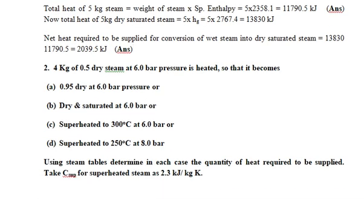Second numerical: four kilograms of 0.5 dry steam at six bar pressure is heated so that it becomes — Case 1: 0.95 dry at six bar; Case 2: dry and saturated at six bar; Case 3: superheated to 300 degrees Celsius at six bar; Case 4: superheated to 250 degrees Celsius at eight bar. Using steam tables, determine in each case the quantity of heat required to be supplied. Take Cp for superheated steam as 2.3 kJ per kg·K.